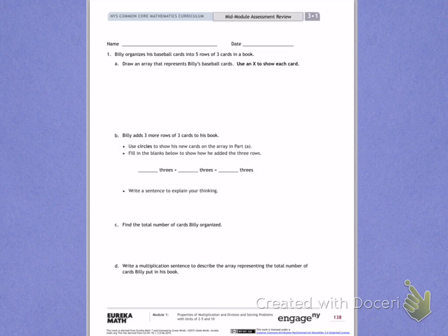Number one, Billy organizes his baseball cards into five rows of three cards in a book. Draw an array that represents Billy's baseball cards. Use an X to show each card.